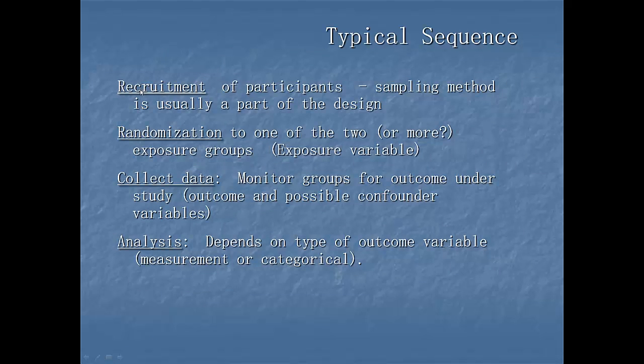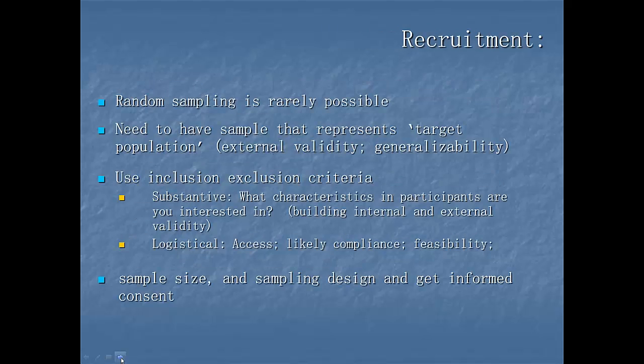So recruitment, that's getting the population. Randomization means selecting, putting people to different groups. Collecting data, we talked about in previous course. And analysis of data. Random sampling is rarely possible. You know that already. You need to have a sample that represents a target population. You don't have to do random sampling for that, but it's a lot more work.